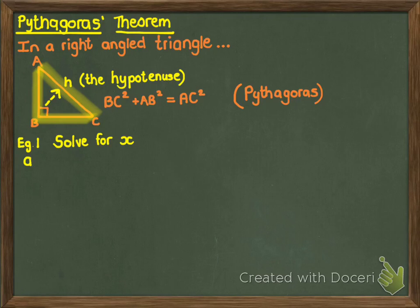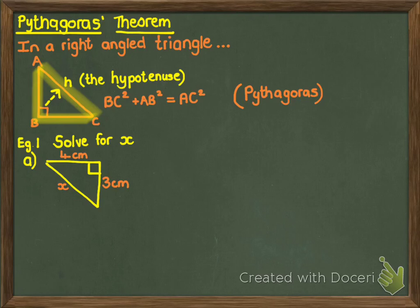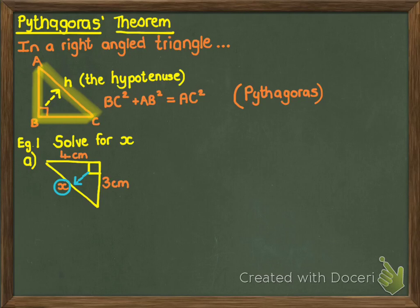It says solve for X. Our first example has a right-angled triangle, which is wonderful, and it has two lengths — one of four centimeters, one of three centimeters — and then X. Now the first thing to notice is that in a triangle there are three sides. You have to know two of the sides in order to find the third. The moment there are two unknowns, you can't use Pythagoras' Theorem. This is perfect because we know two of the triangle's sides. The first thing I do is identify the hypotenuse. Opposite the 90-degree angle is X, so X is the hypotenuse in this example.